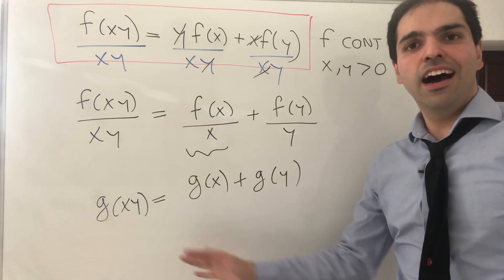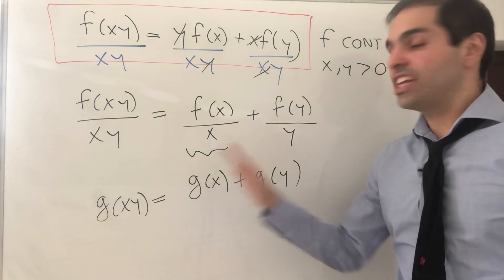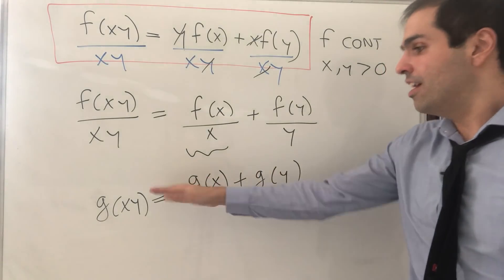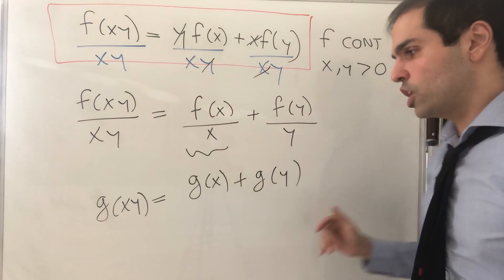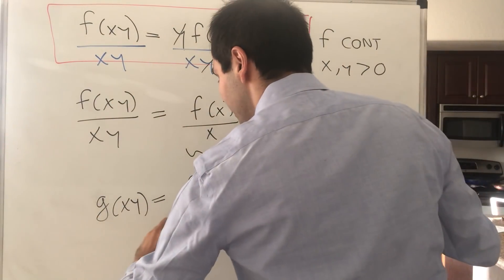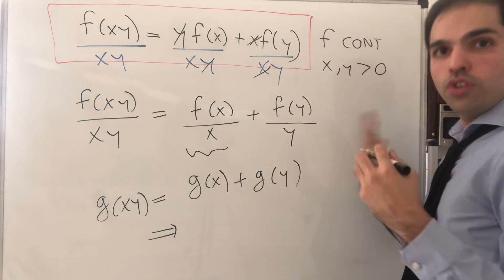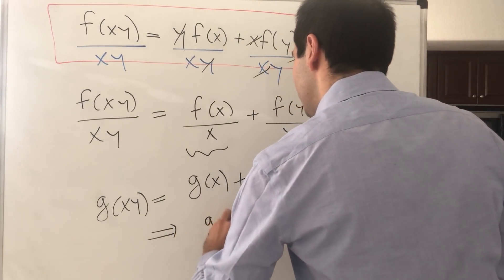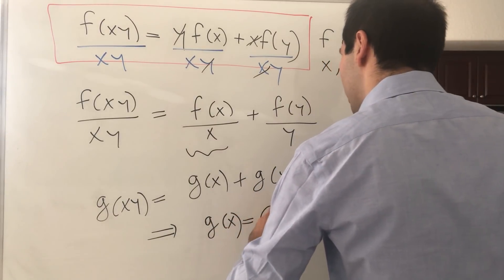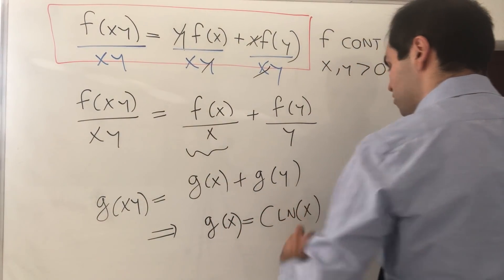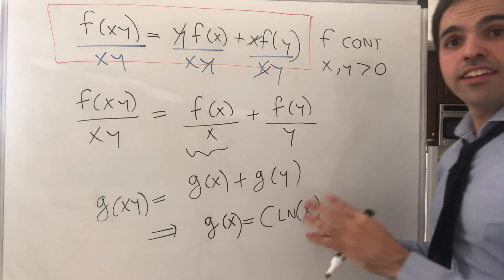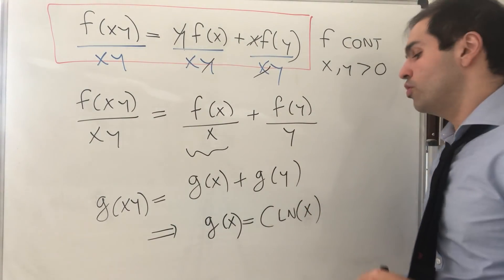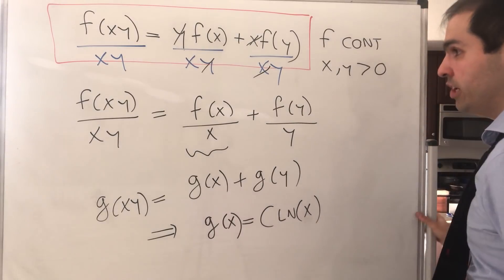But this is actually an identity which I covered in another video, and in that video we found that the only continuous functions g which satisfy this are simply g(x) = C ln(x), where C is a constant. That's if x is positive; in general, you can just put absolute value here.